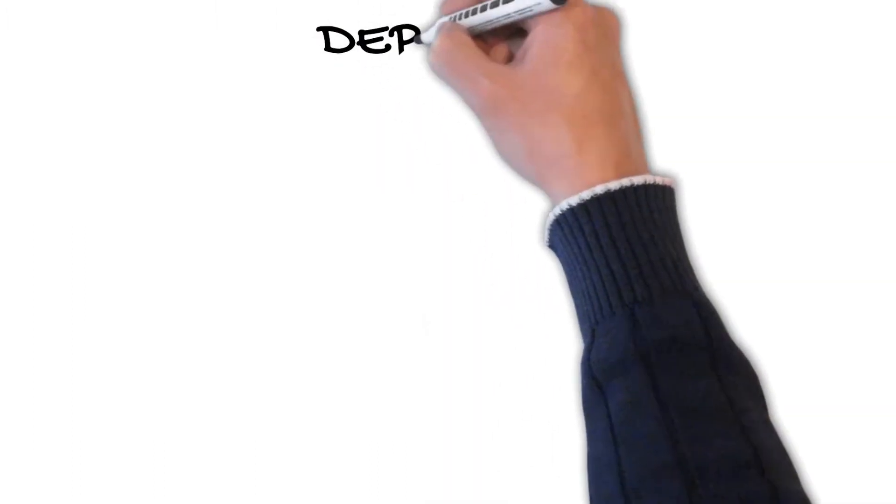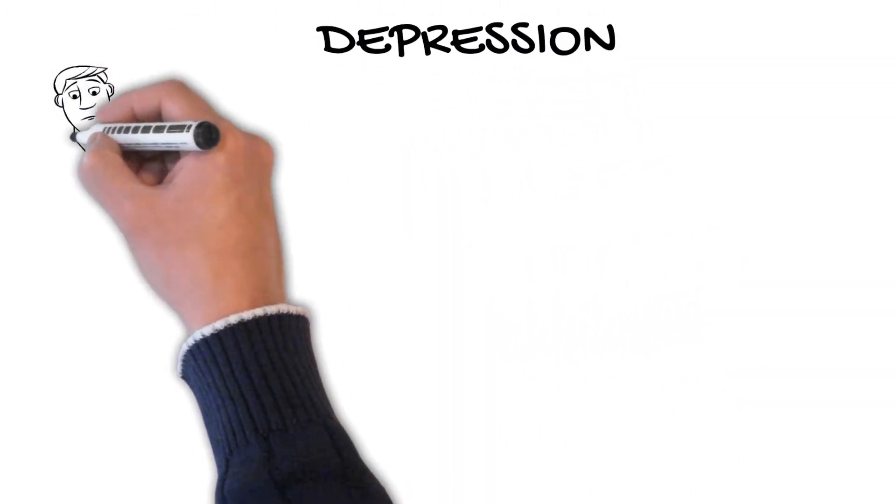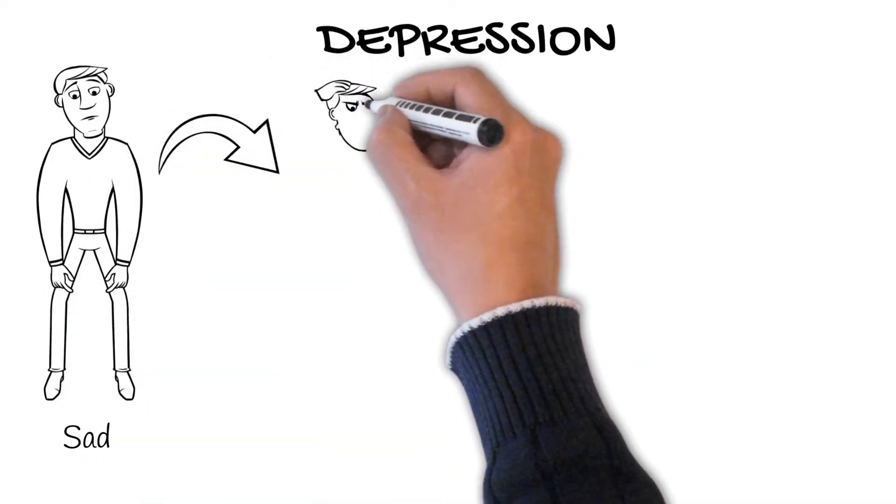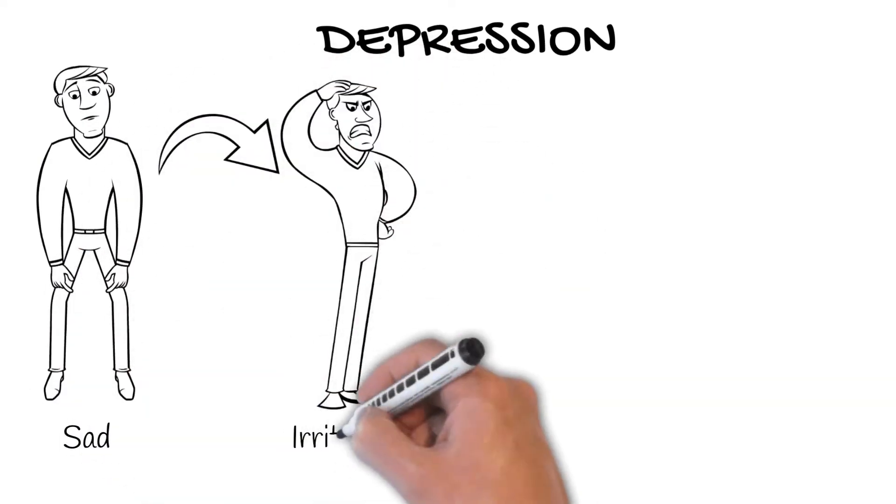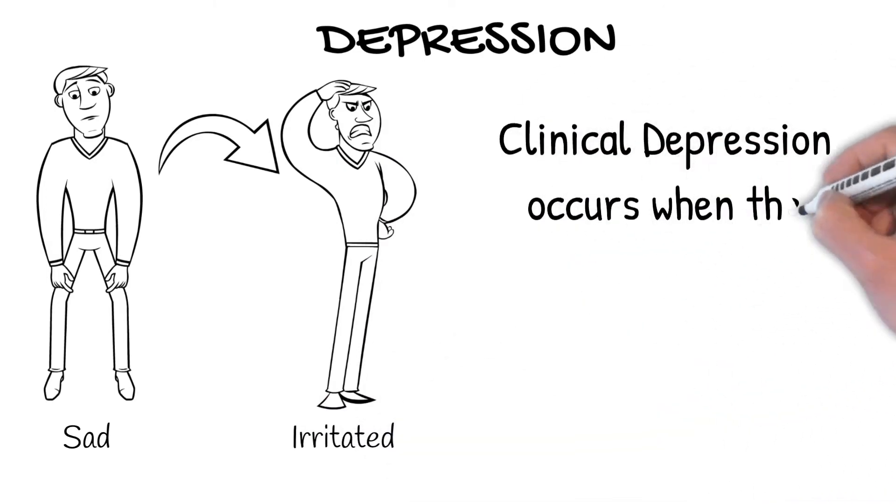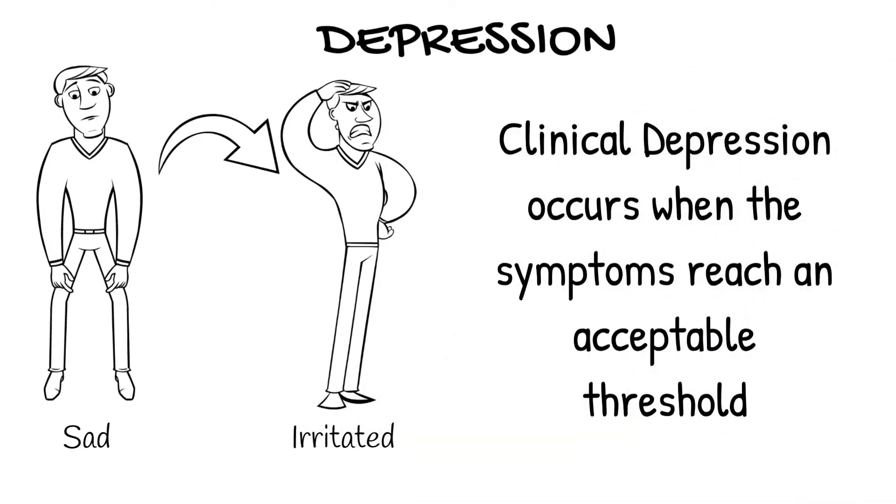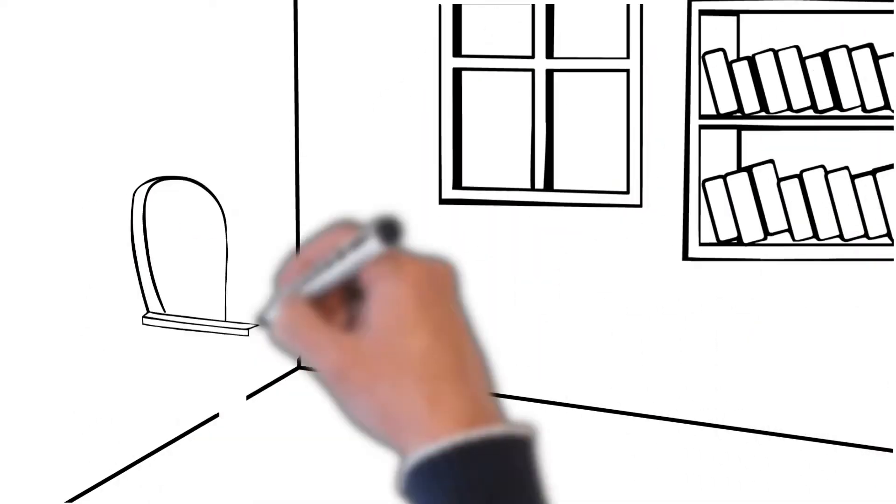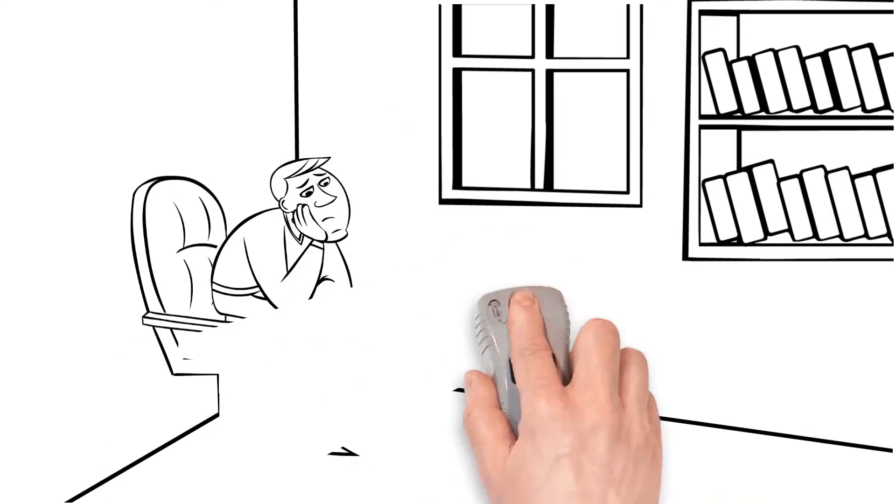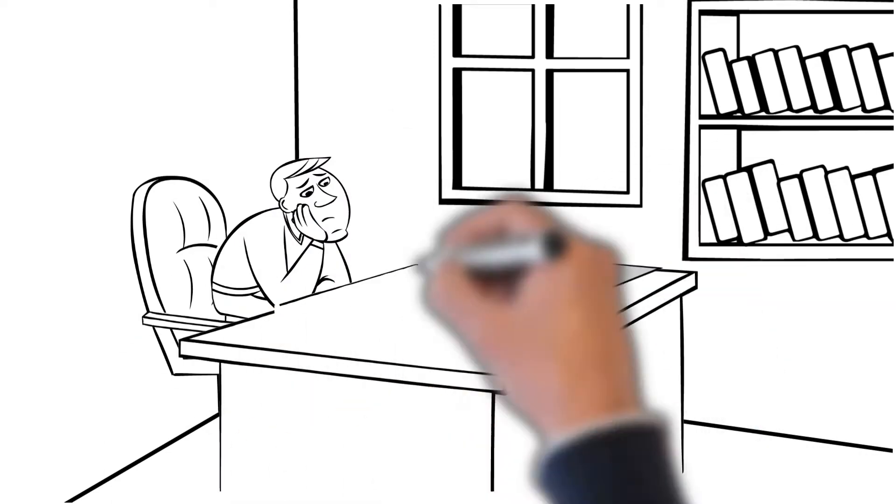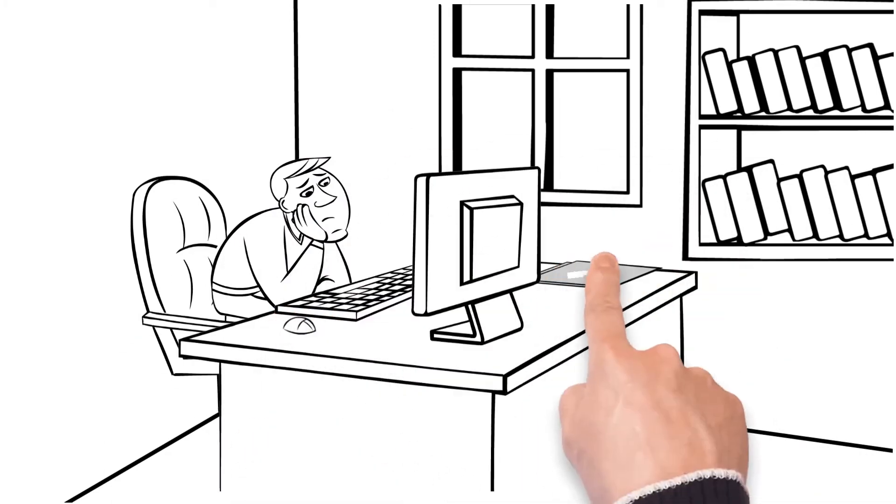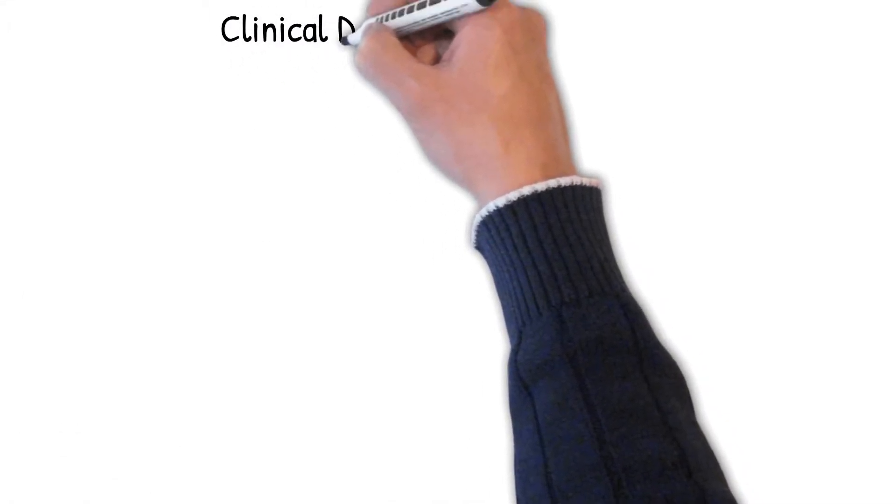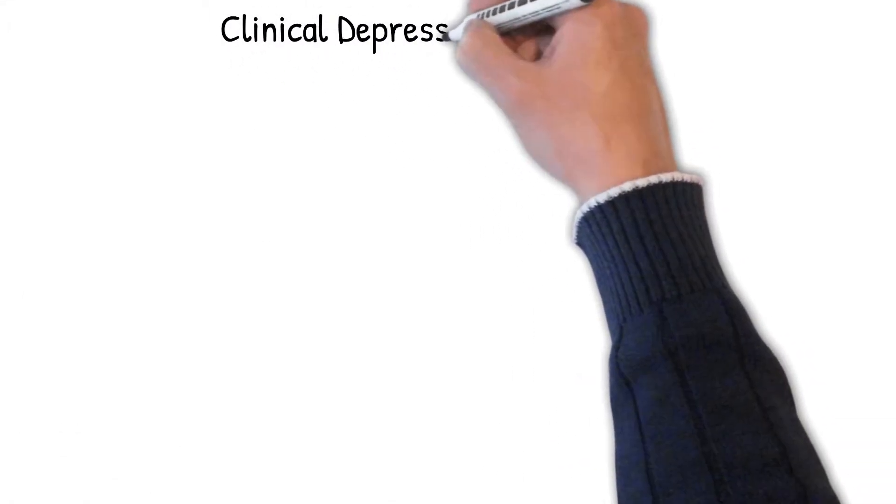Depression is casually used to describe feelings ranging from sadness to irritability. However, clinical depression occurs when the symptoms reach a diagnostic threshold. It's only once an individual's symptoms impair daily functioning that clinical depression is diagnosed, which is not the same as feeling down or sad. Apart from persistently depressed mood and impairment in daily life, other...